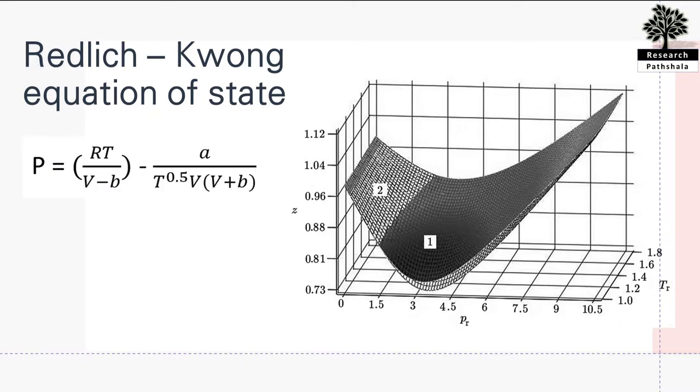The equation is given as follows: P = RT/(V - b) - a/(T^0.5 × V(V + b)), where a is a function of critical temperature and pressure given as follows, and similarly for b.